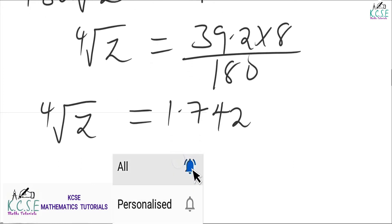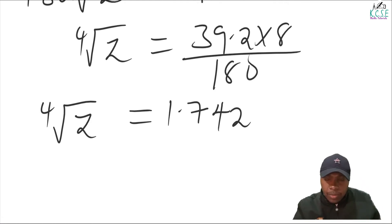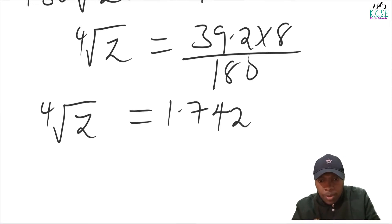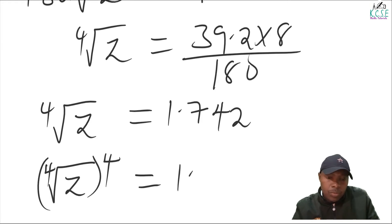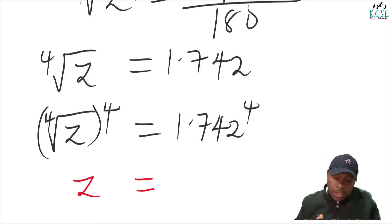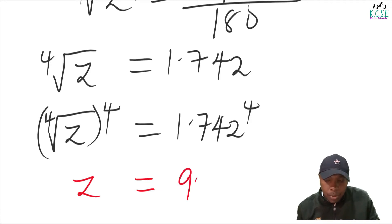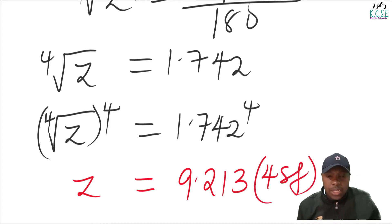To obtain the value of z, we raise both sides of the equation to the power of 4. The fourth root of z raised to power 4 gives z. Raising 1.742 to the power 4 gives z equals 9.213, correct to four significant figures.